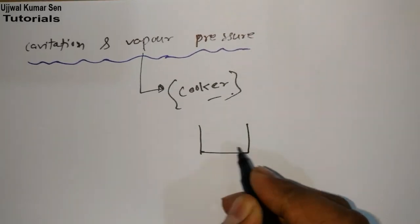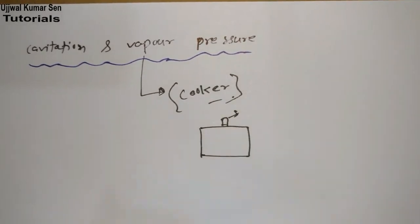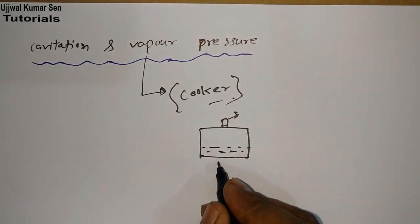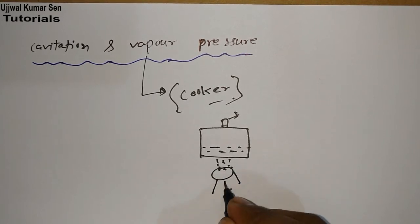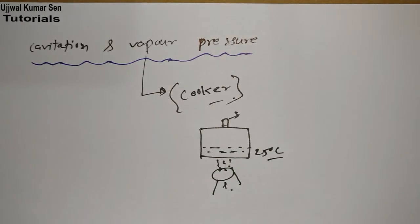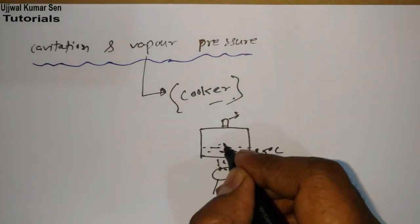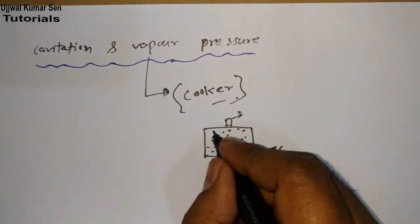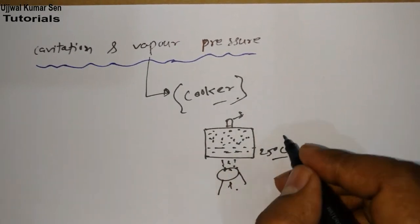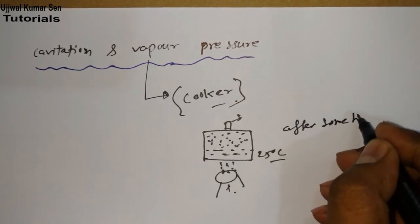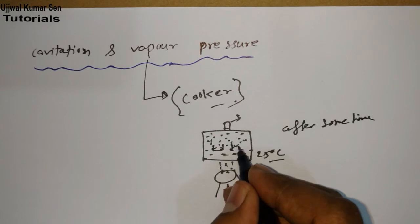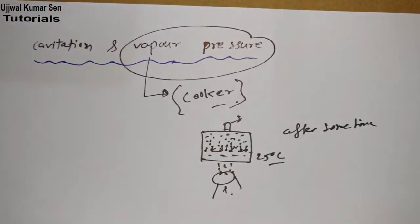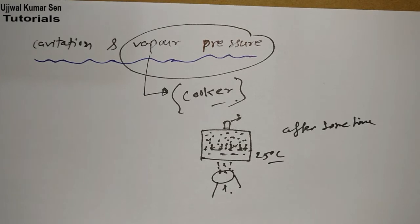So what is happening in the case of a cooker? Let me draw a simple cooker. This is the whistle. Whenever we are putting some liquid water inside and using a burner here for heating, suppose the water is at 25 degrees centigrade. After some time the water heats up, water vapor rises into the empty space above, and after some time the water vapor will start putting pressure on the liquid surface.